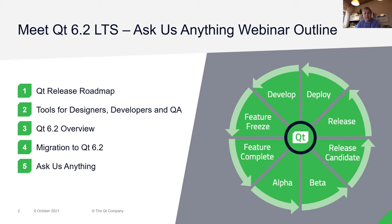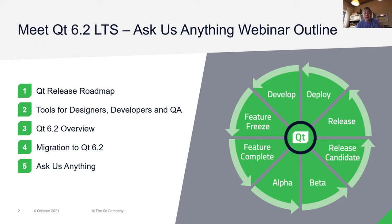We'll start with a very short presentation. We'll dig a bit into where we are in the release roadmap, just a few words about our tooling for developers, designers, and the QA tools. Then a very short overview of Qt 6.2, and then migration to Qt 6.2, which is a topic of many of the questions. We'll cover that with slides and then go to the question part.